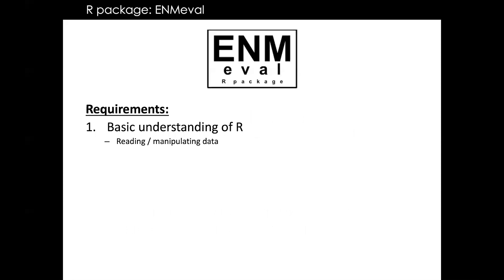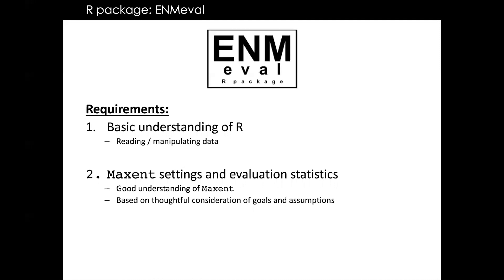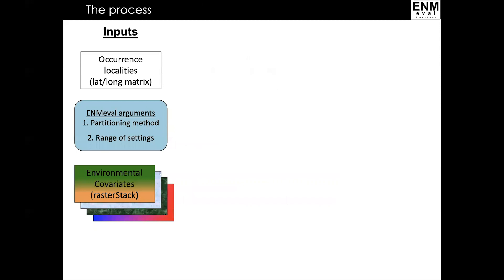There are a few basic requirements to use ENM-Eval effectively. First, you need a basic understanding of R, especially reading and basic manipulation of data and the syntax for setting different arguments for the ENM-Eval functions. Second, you need a solid understanding of the modeling algorithm you're using, as well as the different options for settings and interpretation of evaluation statistics — all based on thoughtful consideration of the goals and assumptions of your study. Third, in terms of data, you need at minimum occurrence records and environmental covariates.